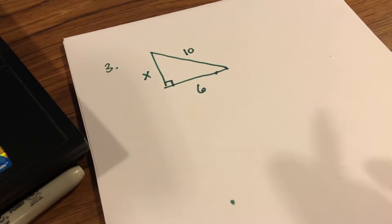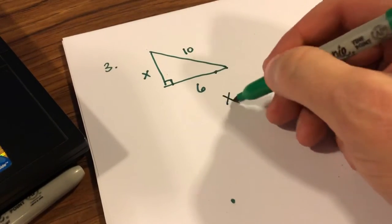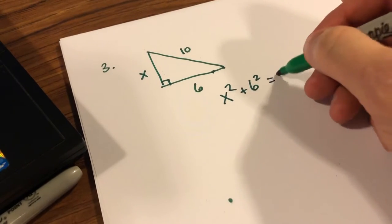No need to use trigonometry here, we're just going to simply use our Pythagorean theorem. So I can do x squared plus 6 squared is equal to 10 squared.